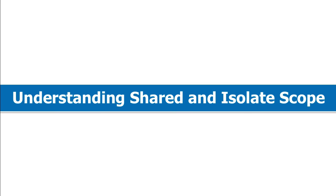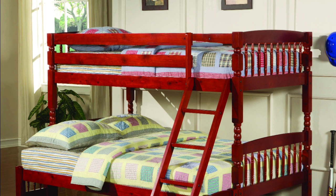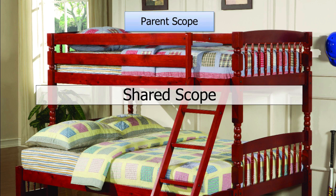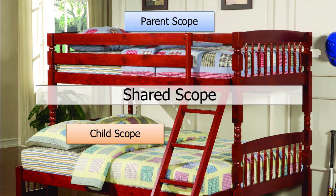Let's talk about shared and isolate scope and the differences between the two and how they play into custom directives. Shared scope is built into AngularJS — think of it like a bunk bed approach. On top you have a parent scope, and on the bottom a child scope. It's nested, so if you have a scope in the parent controller, by default the child controller can access it. We call that shared scope or inherited scope.